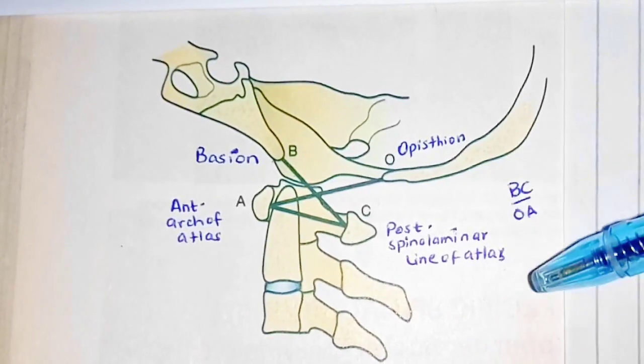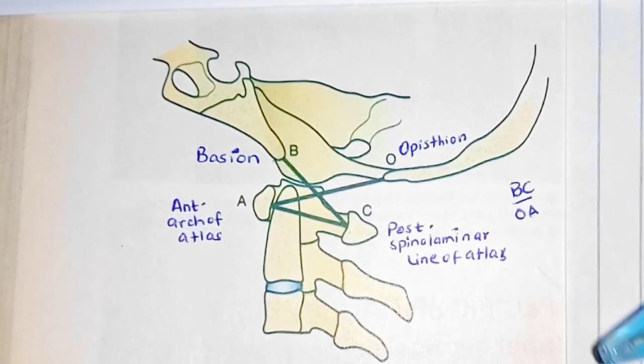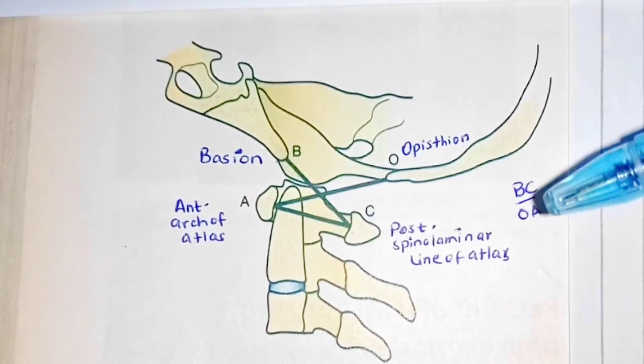Now what are the values that would indicate whether there is any translation in anterior direction or in the posterior direction.